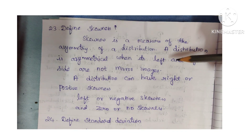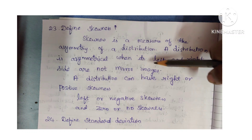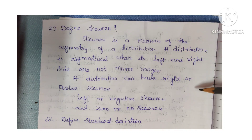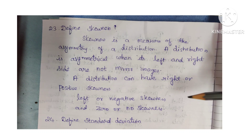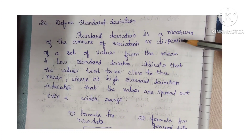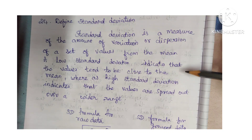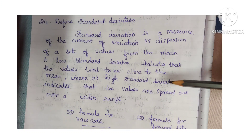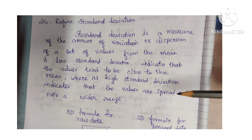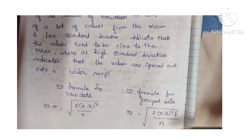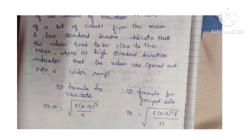Define skewness. Skewness is a measure of the asymmetry of a distribution. A distribution is asymmetrical when its left and right sides are not mirror images. A distribution can have right skewness or positive skewness, left skewness or negative skewness, and zero skewness. Define standard deviation: standard deviation is a measure of the amount of variation or dispersion of a set of values from the mean. A low standard deviation indicates values tend to be close to the mean, whereas a high standard deviation indicates values are spread over a wider range. Standard deviation formulas for raw and grouped data apply as discussed.